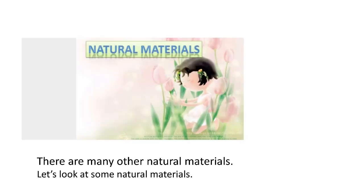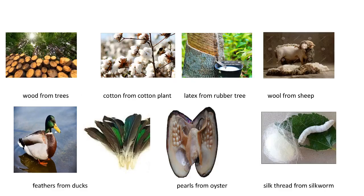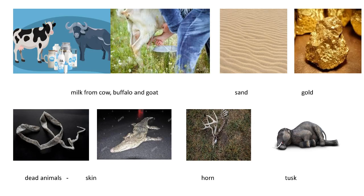Natural materials come from nature. There are many natural materials. Let's look at some examples: wood from trees, cotton from cotton plant, latex from rubber tree, wool from sheep, feathers from duck, pearl from oyster, and silk thread from silkworm.